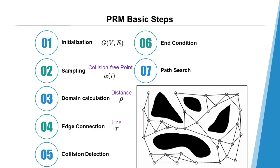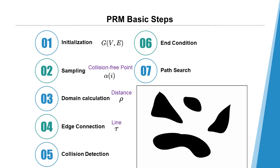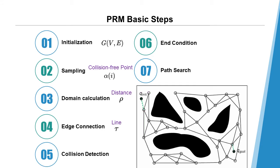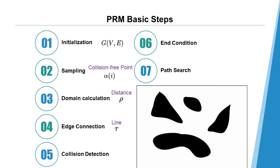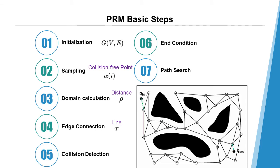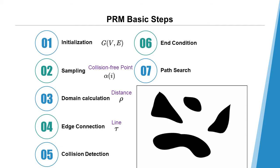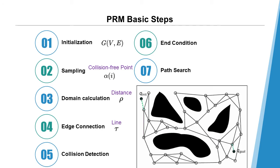Second, sampling. We sample a collision-free point in the configuration space and add it to set V. Three, domain calculation. We define a distance rho for all the vertices in set V. If its distance from alpha i is less than rho, we call it the neighborhood point of alpha i.